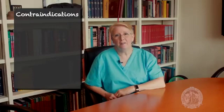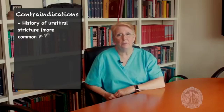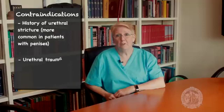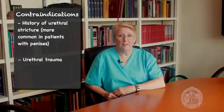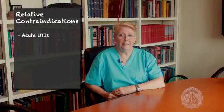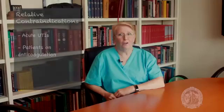Contraindications for placement of a urinary catheter include a history of urethral stricture, urethral trauma — which you should suspect in patients with a high-riding prostate on rectal exam — blood at the urethral meatus, or perineal or scrotal hematoma or ecchymosis. Relative contraindications include patients with acute urinary tract infections and anticoagulated patients. Catheter-associated urinary tract infections, or CAUTIs, are a huge source of nosocomial infection and medical spending, so always think carefully if your patient truly needs an indwelling bladder catheter.